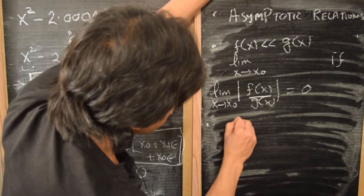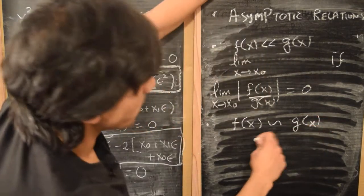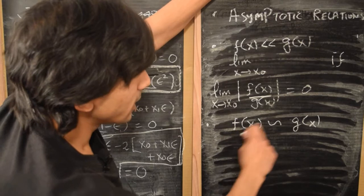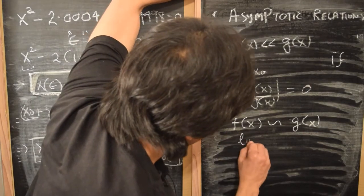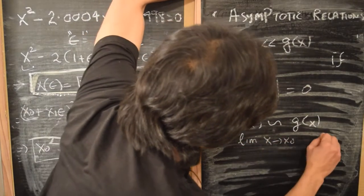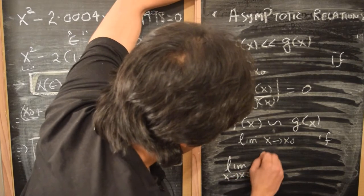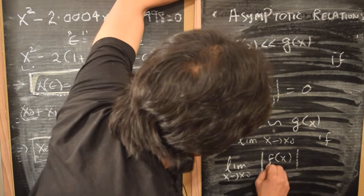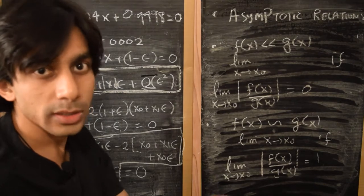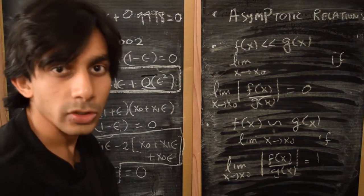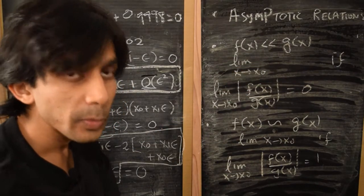The other relation is denoted by the ~ symbol and is sometimes referred to as 'f(x) scales as g(x)' or 'f(x) is asymptotic to g(x)' in the limit that x goes to x₀, if lim|f(x)/g(x)| = 1 as x → x₀. This means that both f(x) and g(x) are comparable to each other in that limit. These two relations are what we now use.